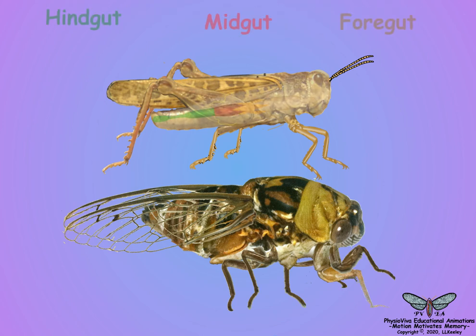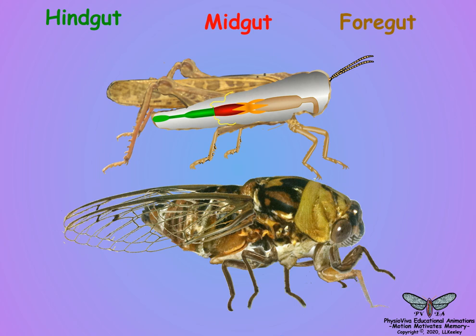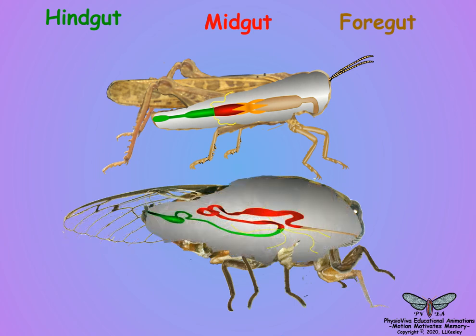Here is the digestive system of a grasshopper that feeds on leaves with a high protein content, compared to a cicada that feeds on plant sap that is mainly water. Note that the cicada has a convoluted midgut, the major area for nutrient absorption, relative to the short, straight midgut of the grasshopper. In general, the higher the protein content, the simpler and shorter the digestive tract.